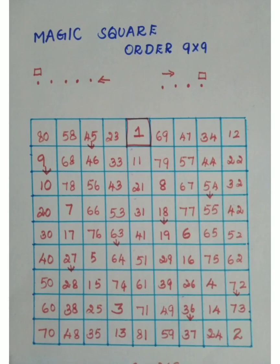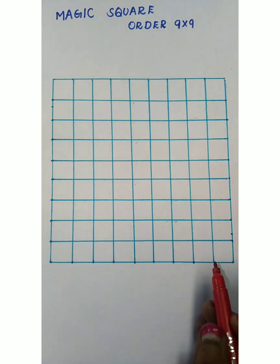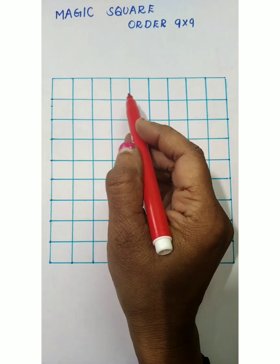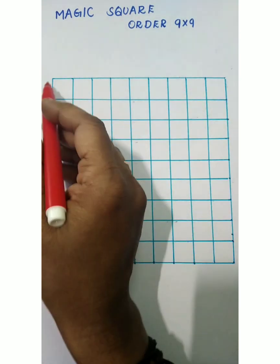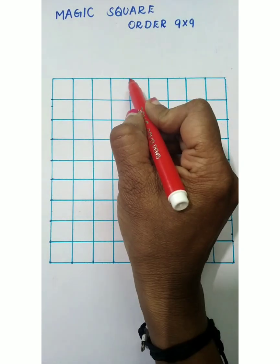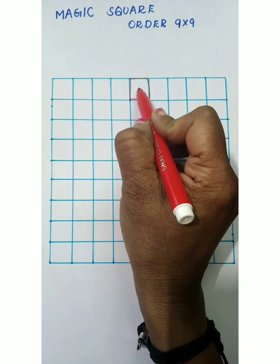Hi, hello, namaste, welcome to my channel Vedic Math by Vinuta. Today I plan to teach an interesting topic: magic square, order 9×9 — 81 boxes total. First we have to choose the center point or center box of this grid: one, two, three, four, five across and one, two, three, four, five down. This is the center box; we have to start from here.